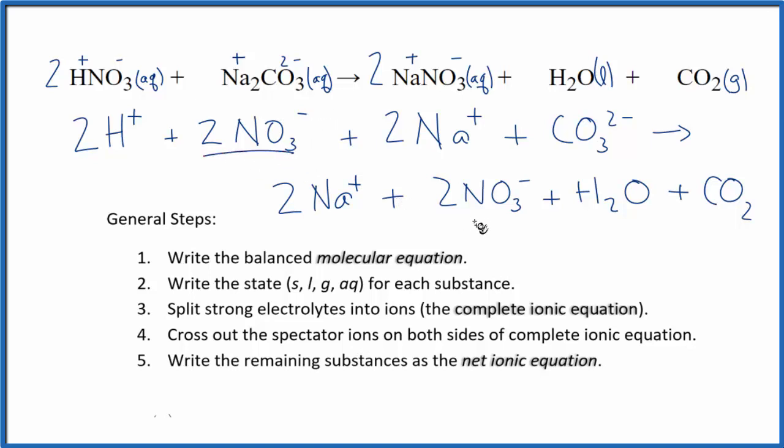We have two nitrate ions here in the reactants and two in the products. Cross those out. Two sodium ions here and then in the products too. We can cross those out. Everything else is unique.